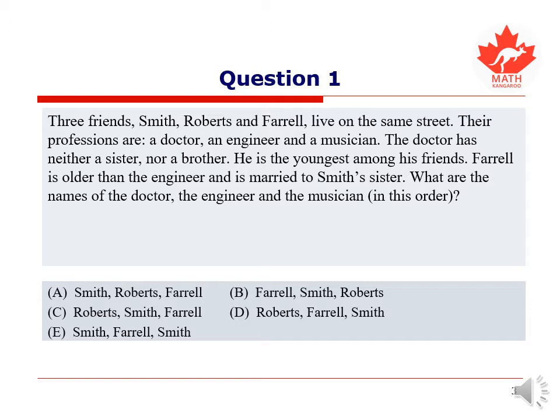What are the names of the doctor, the engineer, and musician in this order? We have A. Smith, Roberts, and Farrell. B. Farrell, Smith, Roberts. C. Roberts, Smith, Farrell. D. Roberts, Farrell, Smith. And E. Smith, Farrell, Smith.